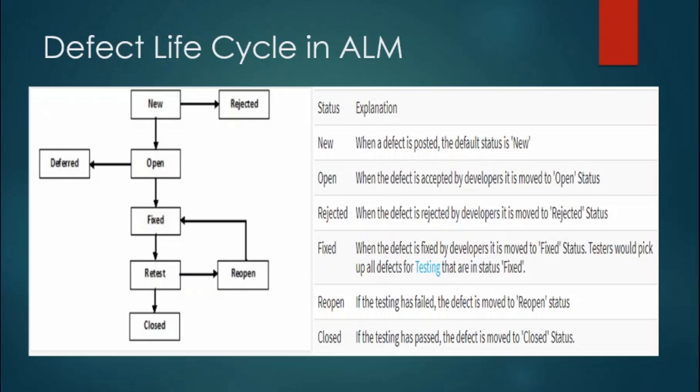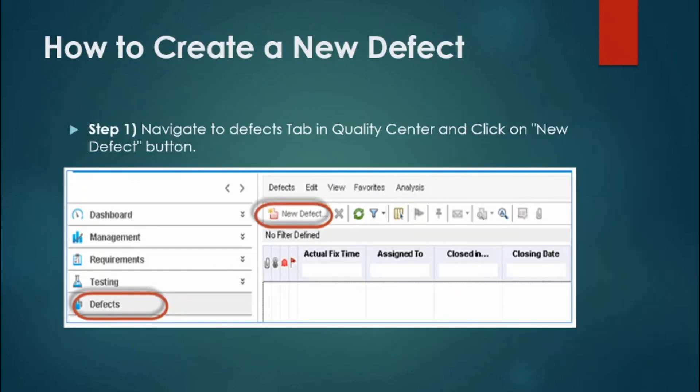If you retest the defect but are still able to encounter the issue, the defect is not fixed and you should move the status to 'Reopen'. Once the defect is fixed, tested by QA, and testing has passed, the defect is moved to 'Closed' status — the final status where the bug life cycle comes to an end.